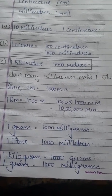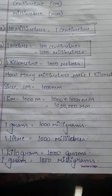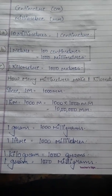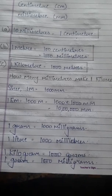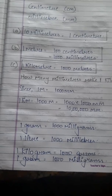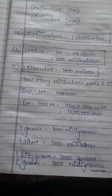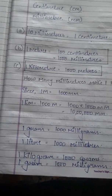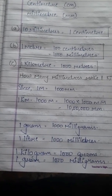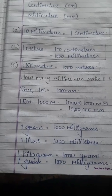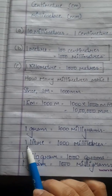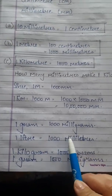We all fill a bucket to bathe, and that capacity is measured in litres. But sometimes we want smaller quantities — like hair oil or soft drinks from the market. The quantity of such liquids is given in millilitres, not litres. So, 1 litre equals 1000 millilitres.